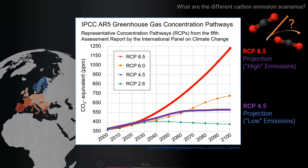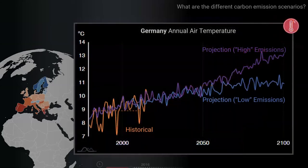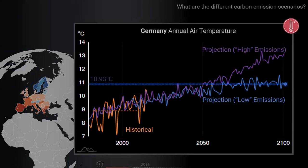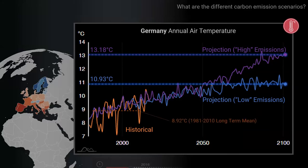But what do both of these mean in terms of climate change and temperature? Going back to our annual air temperature graph for Germany, we can see that by 2100 it is projected that under a low emission scenario, RCP 4.5, where carbon concentrations stabilise, the average yearly temperature in Germany could be around 11 degrees Celsius. In contrast, in a scenario where concentrations continue to rise, the temperature could be above 13 degrees Celsius on average. Compared to the historical average measured between 1981 and 2010, that's an increase of between 2 and just over 4 degrees depending on the scenario.